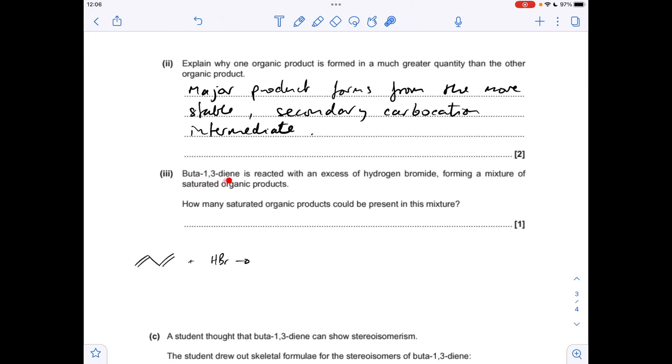Moving on to the next part. We're told buta-1,3-diene reacts with an excess of hydrogen bromide forming a mixture of saturated organic products. So the fact that we're getting saturated product means that both of the double bonds are going to react and become C-C single bonds. So because there's two double bonds, we can react this with two moles of HBr.